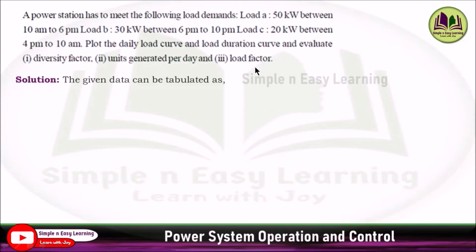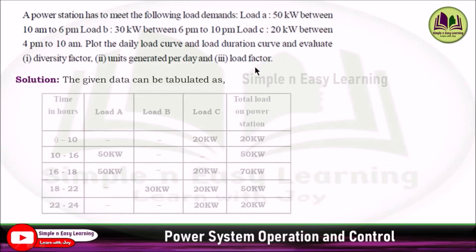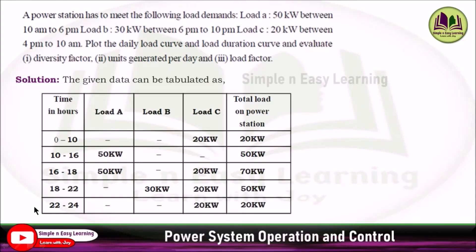The given data can be tabulated as: the time in hours — 0 to 10, then 10 to 16, 16 to 18, 18 to 22, and 22 to 24. Based on the hours available, I divided the hours in the table like this.